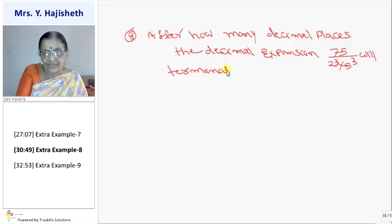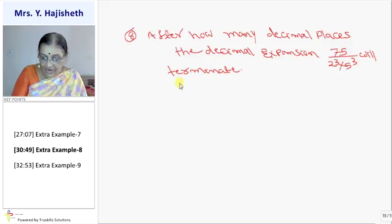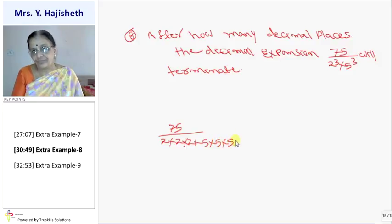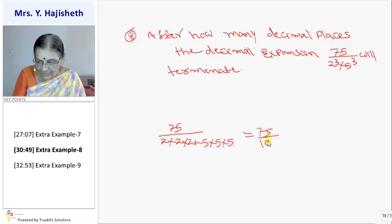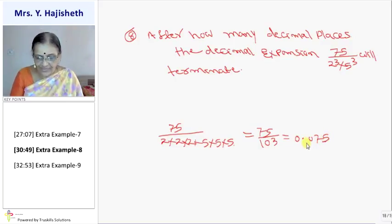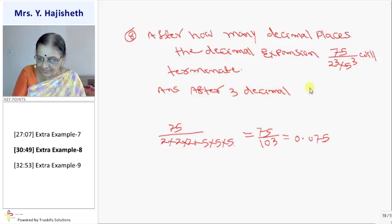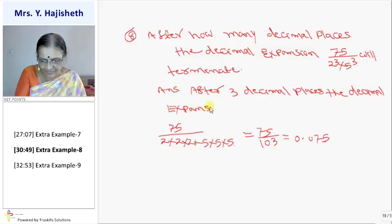Puchaya, kitne number of decimal places ke baad it can terminate. 75 upon 2 into 2 into 2 into 5 into 5 into 5. So it is 75 by 10 cube. So it is 0.075. Decimal I converted, so I can say answer mein kya aayega? After 3 decimal places, the decimal expansion will be terminating.